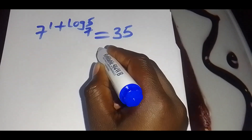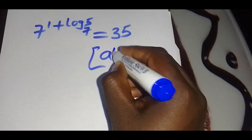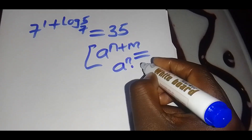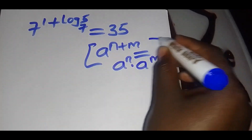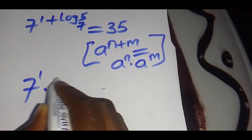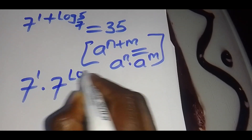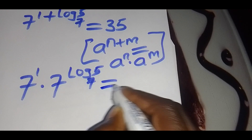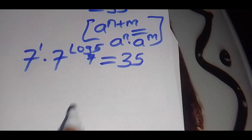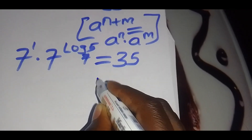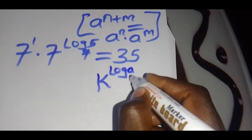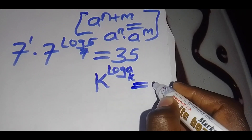Using the identity a raised to n plus m equals a raised to n multiplied by a raised to m, we have 7 raised to 1 multiplied by 7 raised to log 5 to base 7, which should equal 35. Now applying the identity k raised to log a to base k equals a, we get 7 times 5.